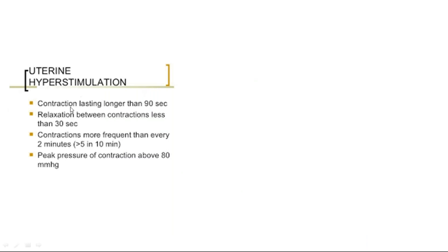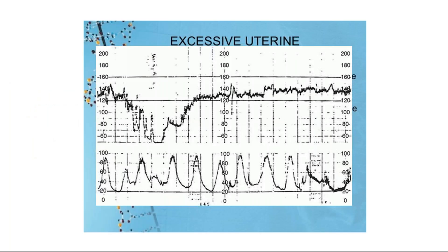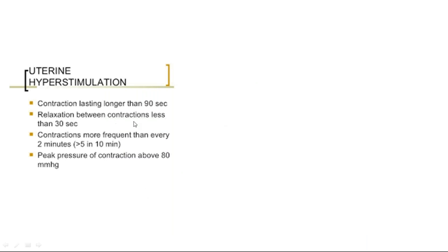Criteria for uterine hyperstimulation: when a contraction lasts more than 90 seconds; when relaxation between contractions is less than 30 seconds; when contractions occur more frequently than every 2 minutes — that means more than 5 in 10 minutes; and when the peak pressure goes above 80 mmHg. Any one of these criteria can be present to say hyperstimulation. So here you can see no relaxation, contractions are more frequent, and peak pressure is touching above 80 mmHg, going up to 90.